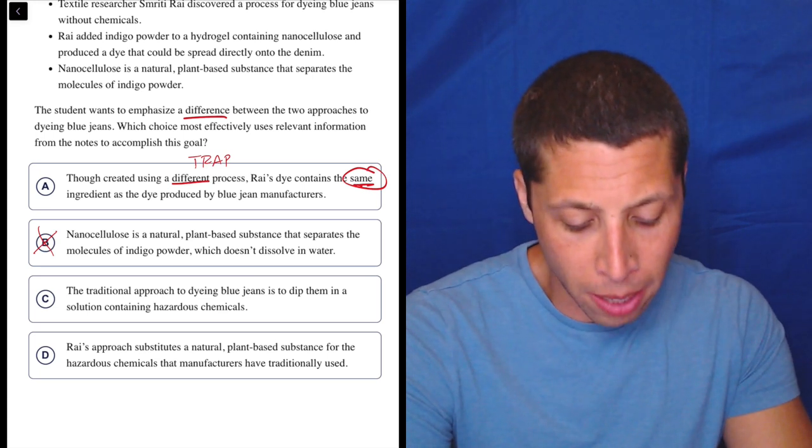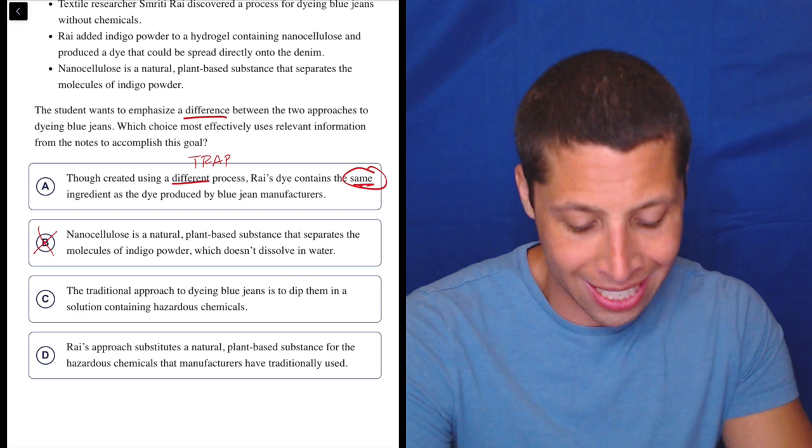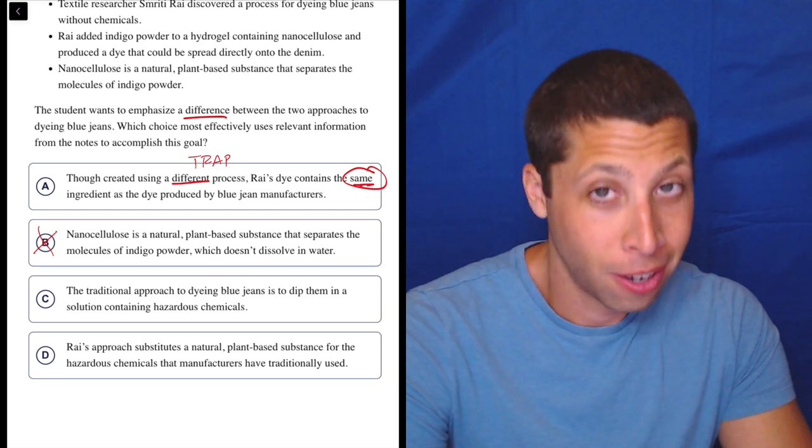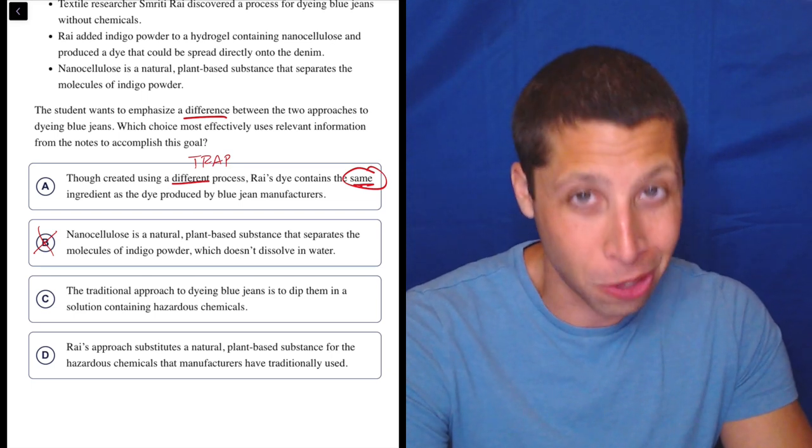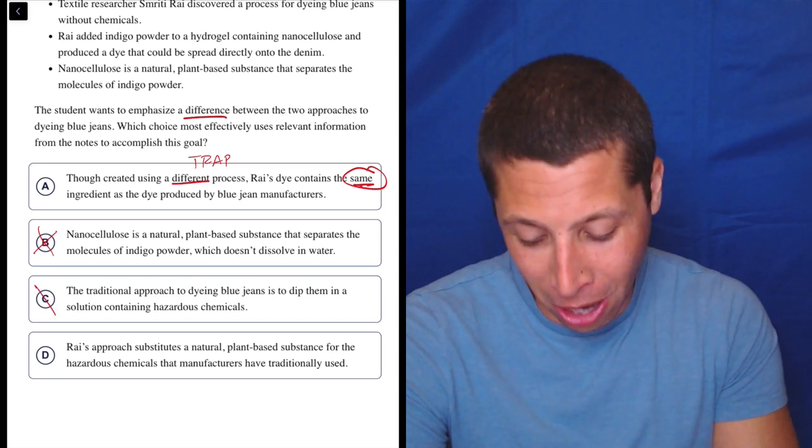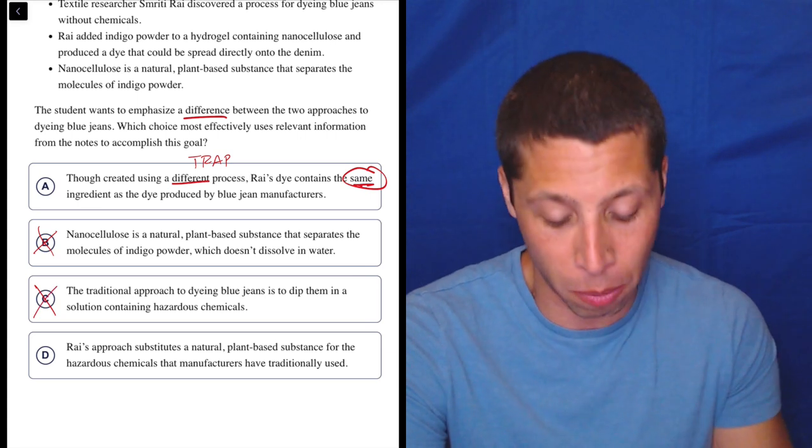C. The traditional approach to dyeing blue jeans is to dip them in a solution containing hazardous chemicals. Okay, but there's two approaches. So where's the other approach? We haven't talked about it. We can't talk about a difference if we only talk about one approach.